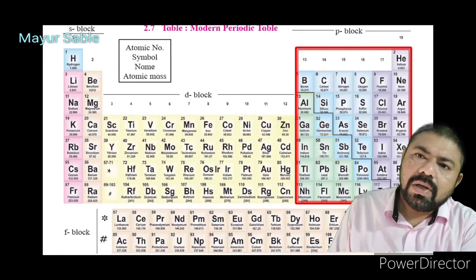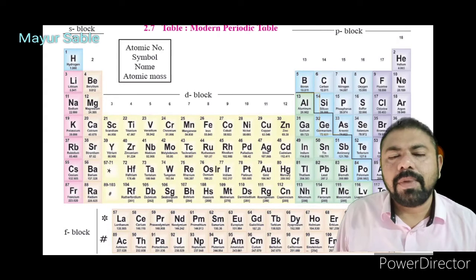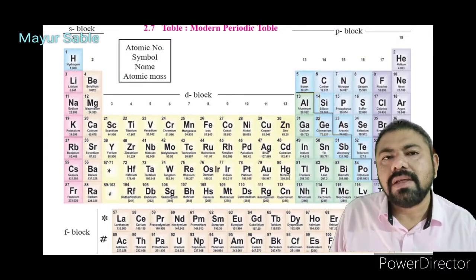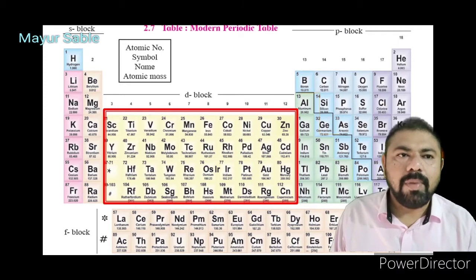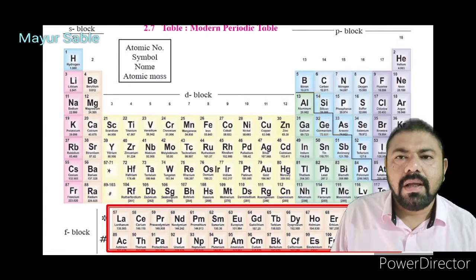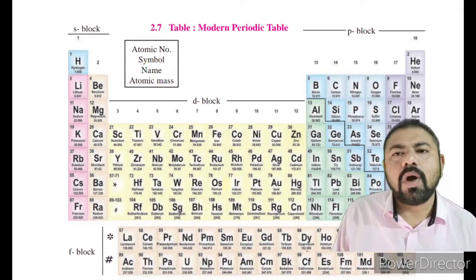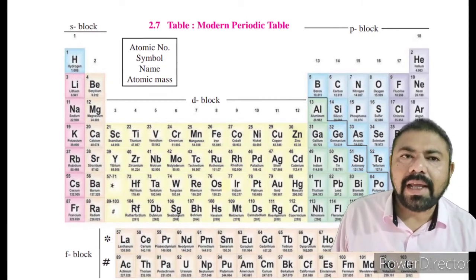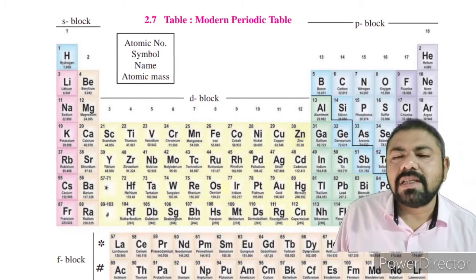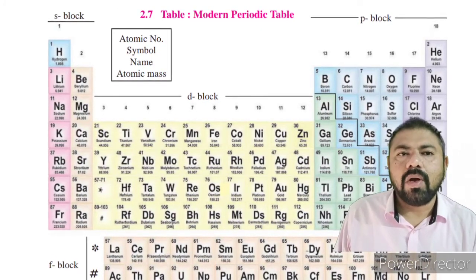The entire periodic table is divided into four blocks: the s block, p block, d block, and f block. According to the electronic configurations of elements, they are categorized into different blocks. Group numbers 1 and 2 are s block elements; group numbers 13 to 18 constitute the p block; group numbers 3 to 12 form the d block; and the lanthanide and actinide series placed below are the f block.